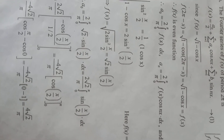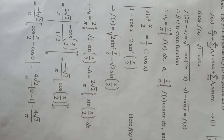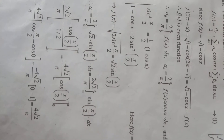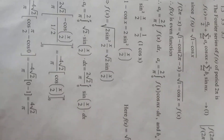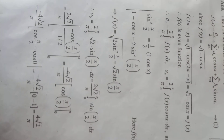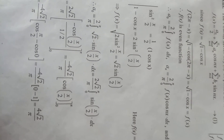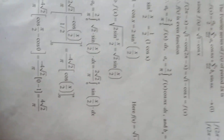Therefore it is an even function. Therefore a naught equals 2 by pi integral from 0 to pi of f of x dx. We can generalize this as a of n equals 2 by pi integral from 0 to pi of f of x cos nx dx, and b of n equals 0 because that part tends to 0.